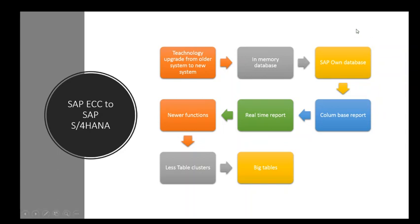Running in-memory makes the system much faster than running on hard disk, SSD, or other drives. Application server costs have become cheaper and memory can be increased affordably. SAP also developed their own database called HANA — previously they used third-party databases like Oracle. The HANA database runs in-memory and supports newer functions such as running reports on a column-based model.